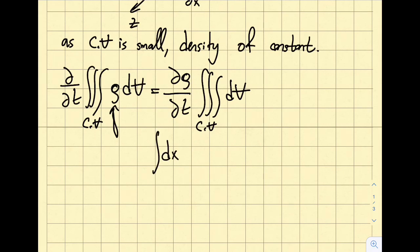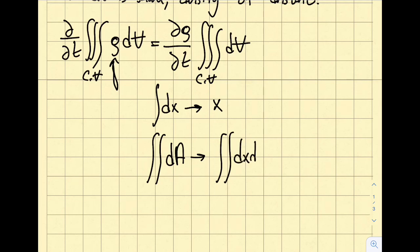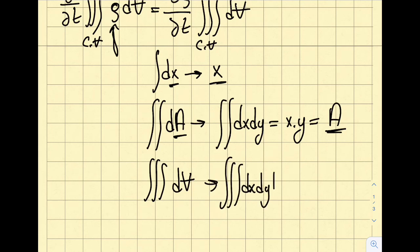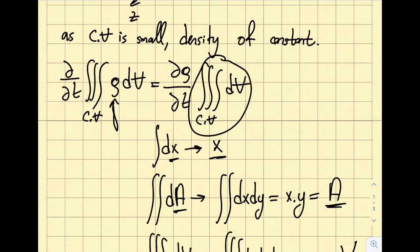The triple integral of dV in Cartesian coordinates is the integral of dx dy dz, which gives x times y times z — simply the volume. So the first term of the continuity equation becomes (∂ρ/∂t) times Volume.